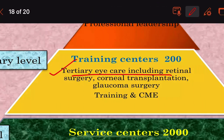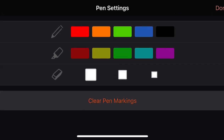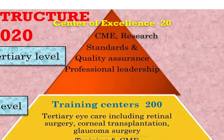At the training centers and centers of excellence — the tertiary level — we have retinal surgery, corneal transplantation, glaucoma surgery, training and CME (continued medical education). The center of excellence (20 total) provides research, standards and quality assurance, professional leadership, and strategy development.